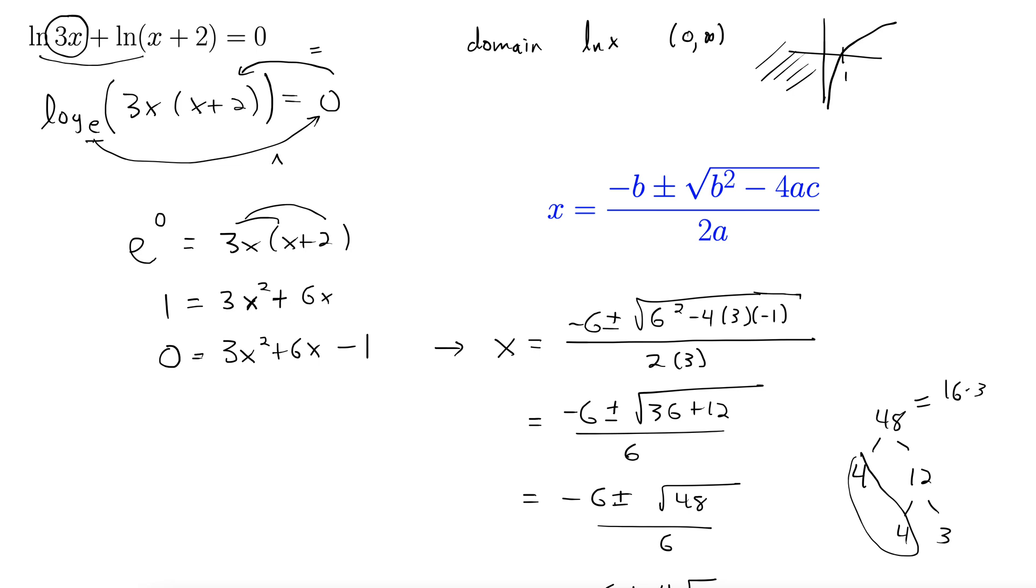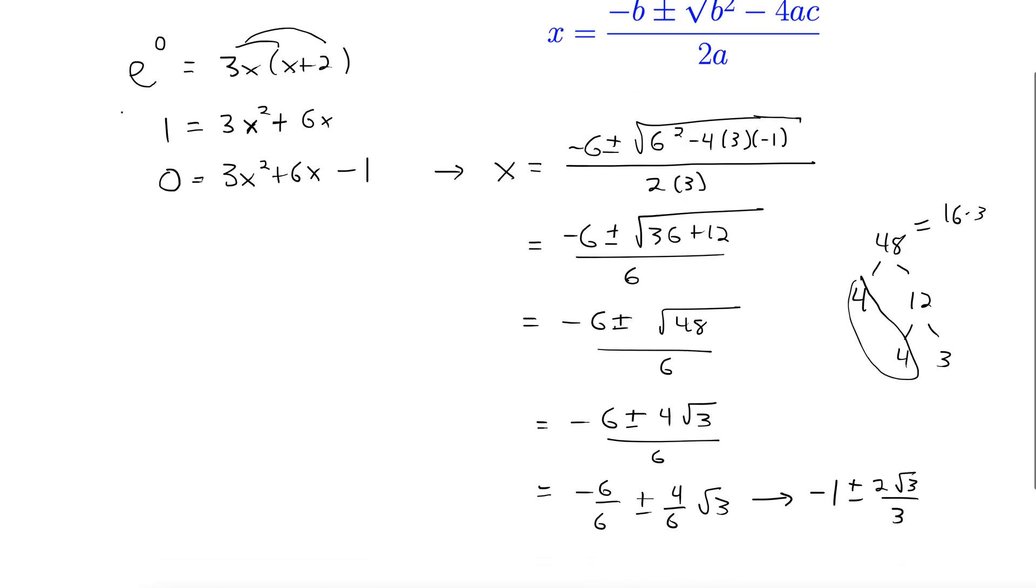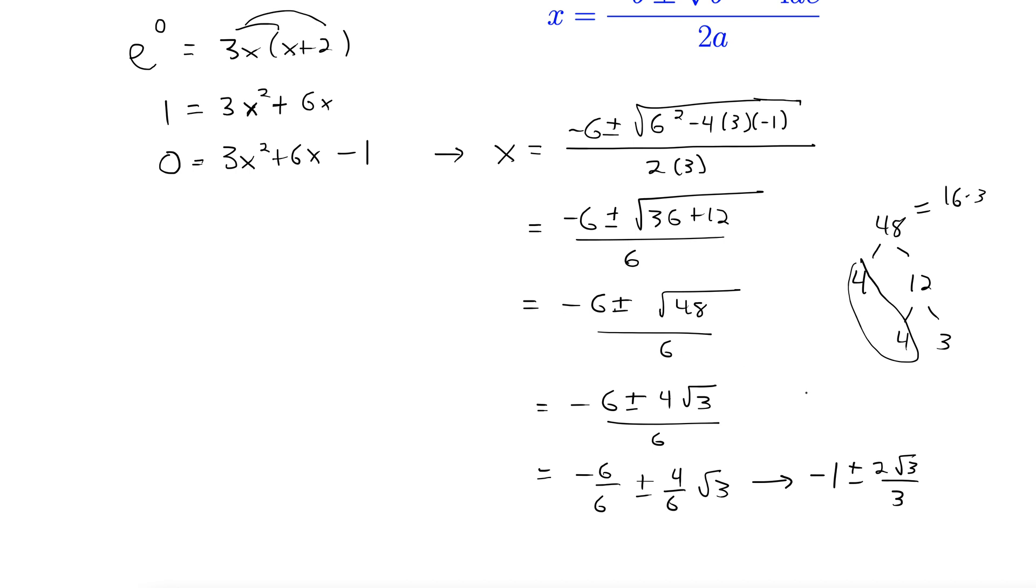In this case, you have to look at your original question to see. Here we have 3 times x. So if x is negative, we're putting a negative inside the natural log, which we cannot do. Back down to our answers. One of these answers, negative 1 minus all this stuff, is going to be negative. The plus all this stuff is going to be positive, so we just need to get rid of one of them. So our final answer is negative 1 plus 2 rad 3 over 3.